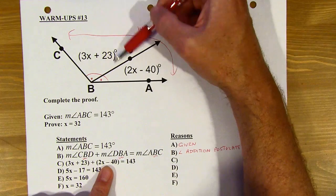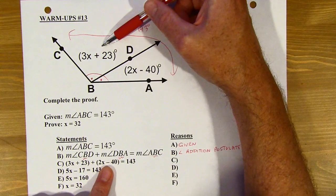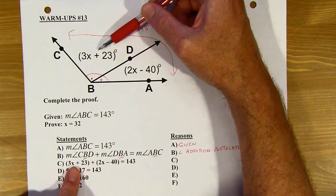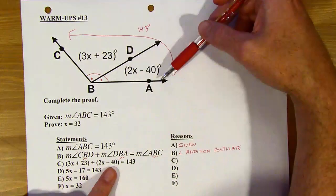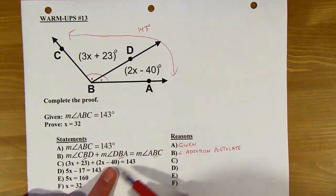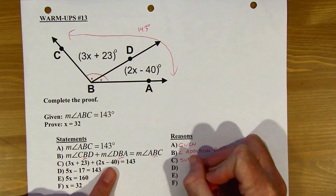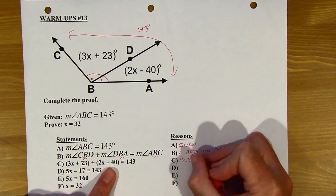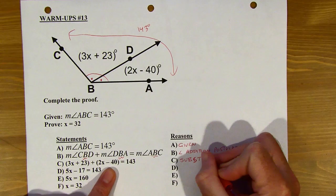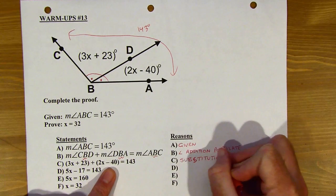And likewise, we've done the same thing with the other two angles. We've just used the given info that's in the diagram. So it says that this angle up here, the top angle is 3x plus 23. So we can substitute that in for CBD and we can substitute 2x minus 40 in for DBA. So this is substitution that we're using.